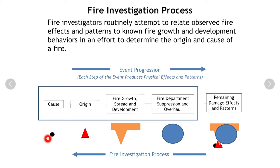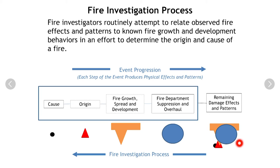Each step in the event progression generates an imprint — some sort of effect or pattern. The cause generates an imprint, the origin generates an imprint, and the fire growth, spread, and development behavior generates imprints along the way. Ultimately, the fire department suppression and overhaul operations can also impart a set of effects and damages to the fire scene. What we are left with is this conglomeration of accumulated effects and patterns that we get to look at after the fact. Those effects and patterns are all layered over the top of each other, and we have to work to segregate and separate each one of those imprints to assign them to where they came from during the event progression and lead us back to an origin and ultimately cause.